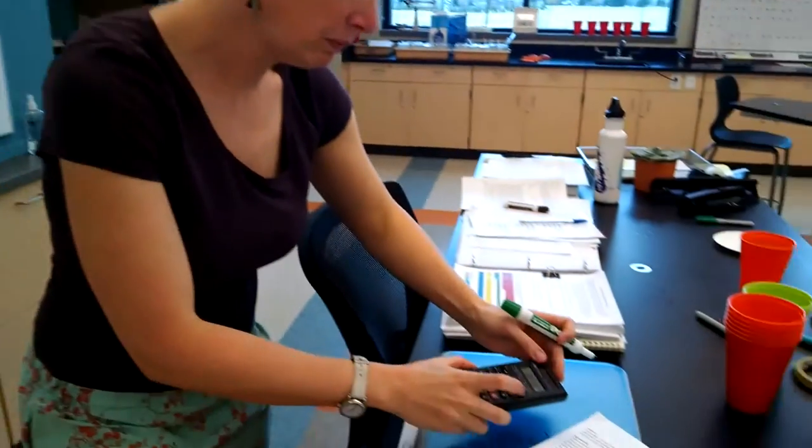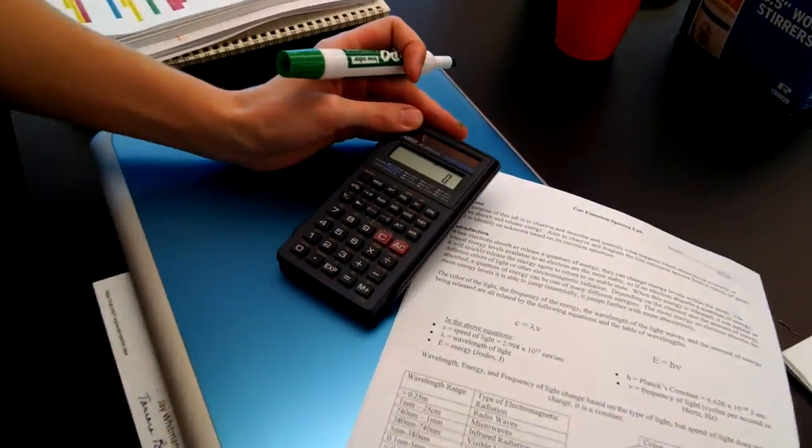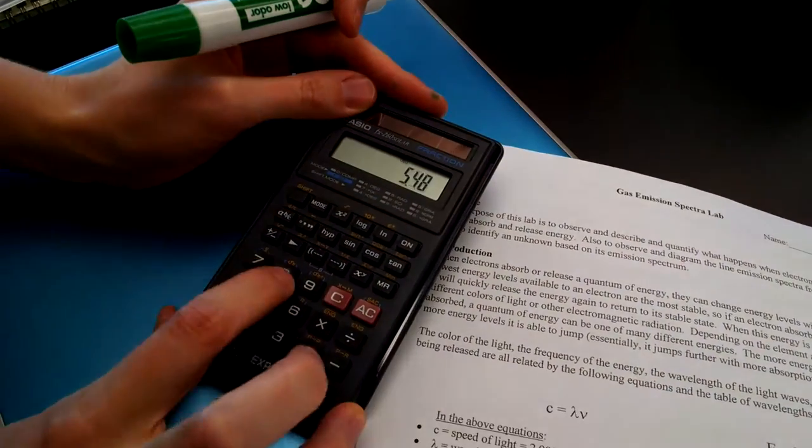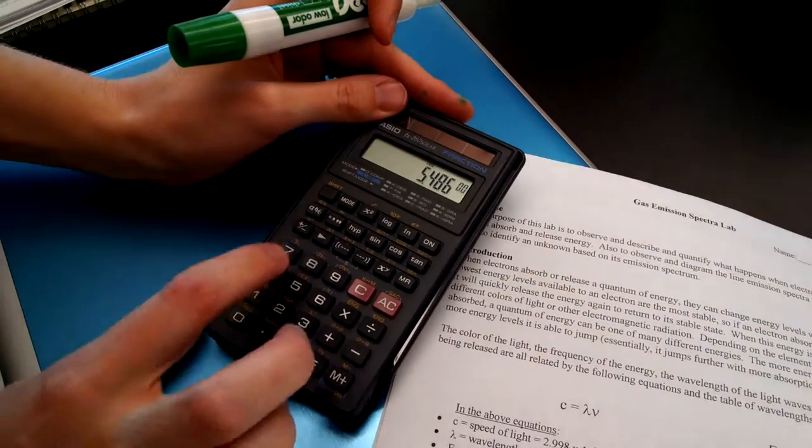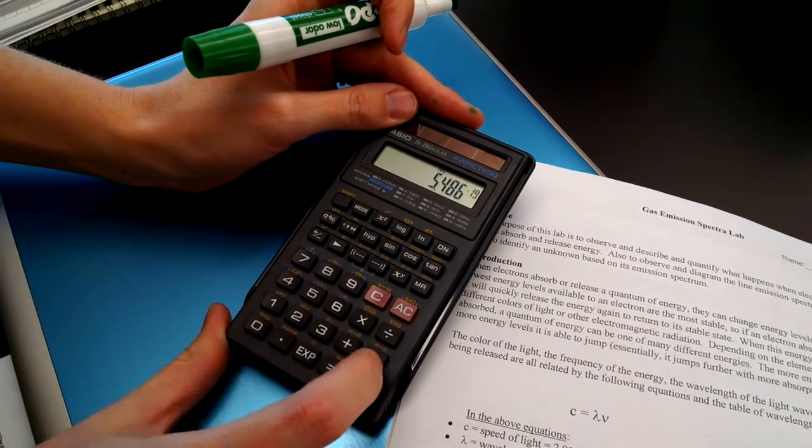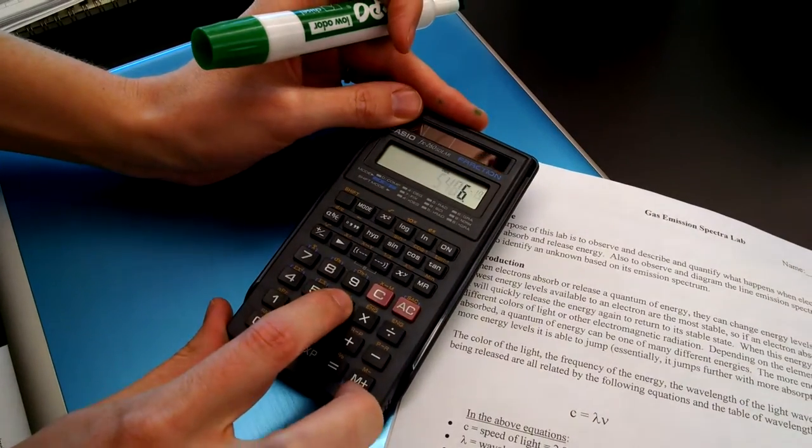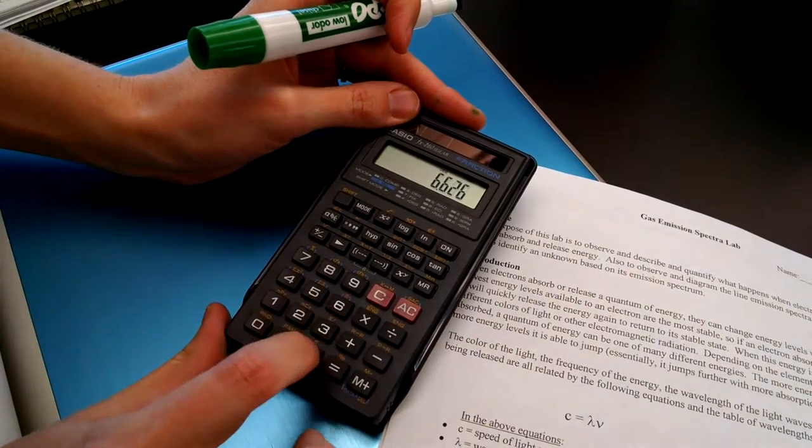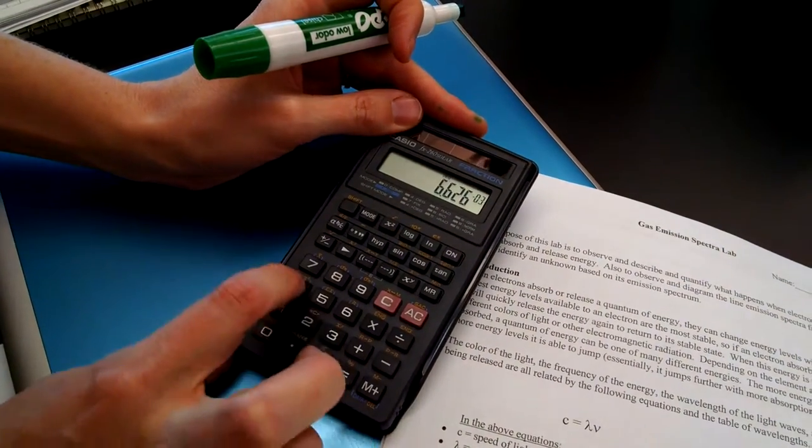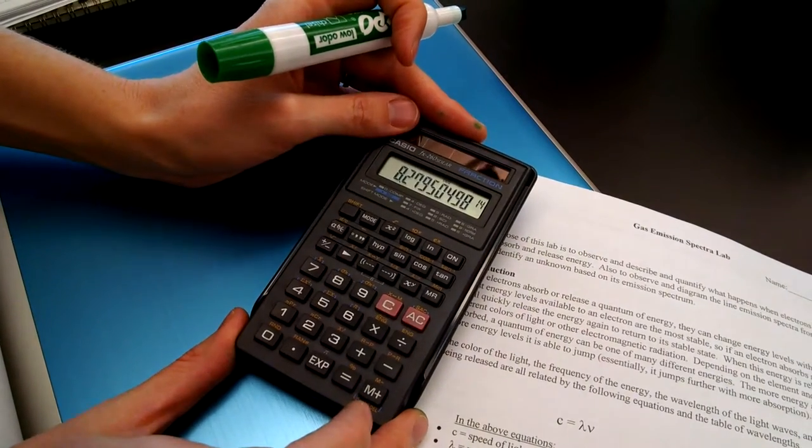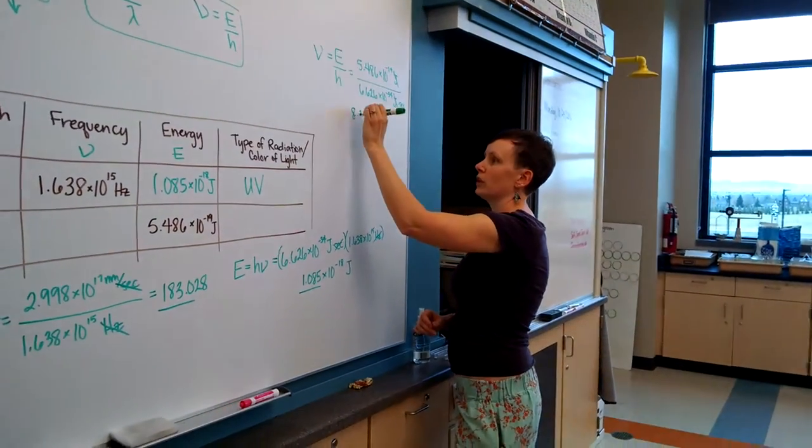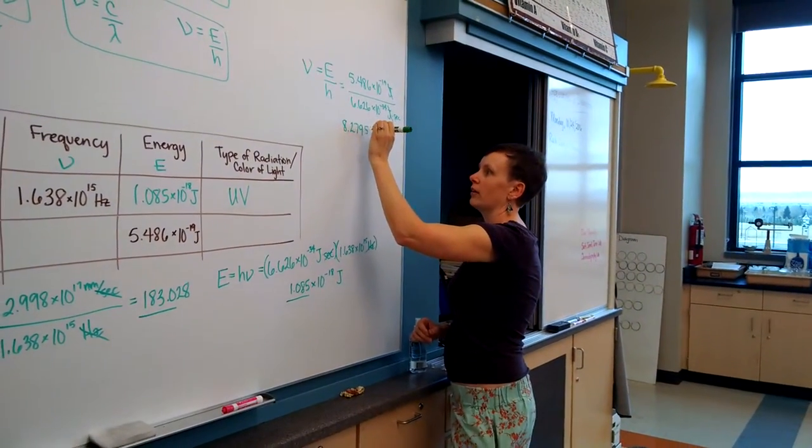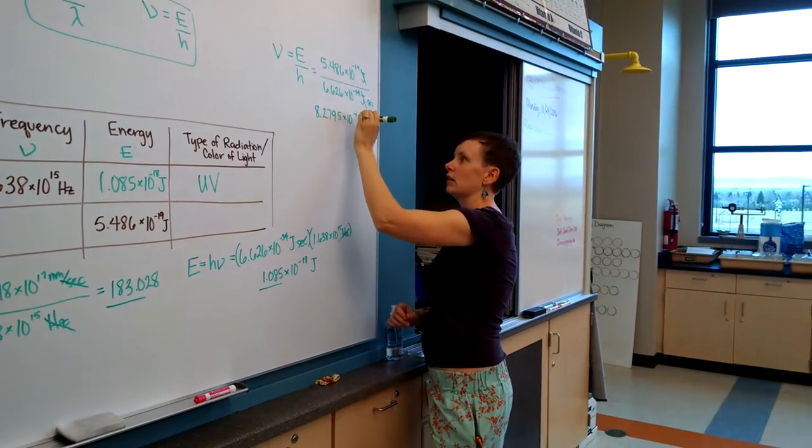Type that in. 5.486 EXP negative 19, divided by Planck's constant, 6.626 EXP negative 34, and we get 8.2795 times 10 to the 14th. 8.2795 times 10 to the 14th hertz.